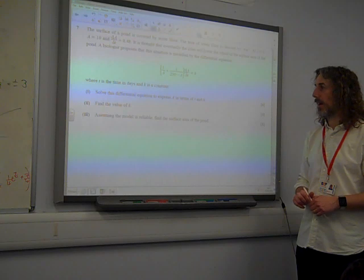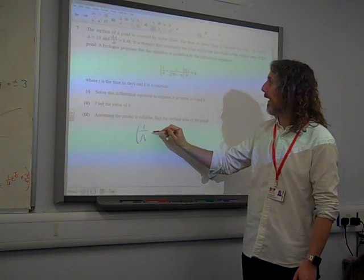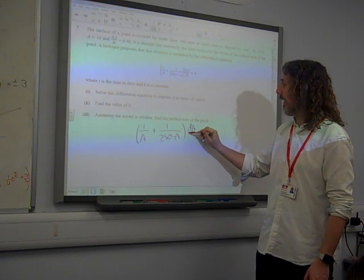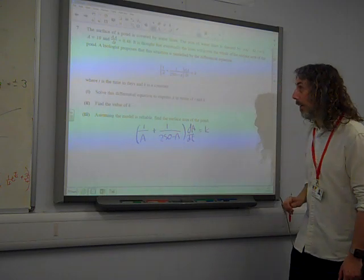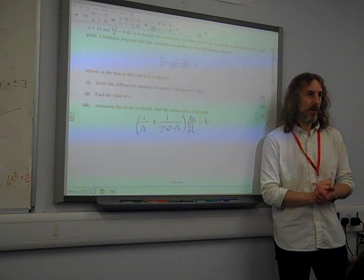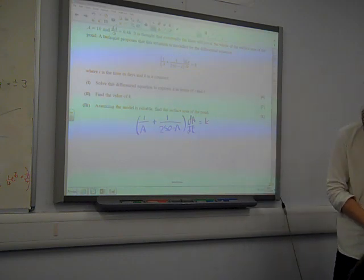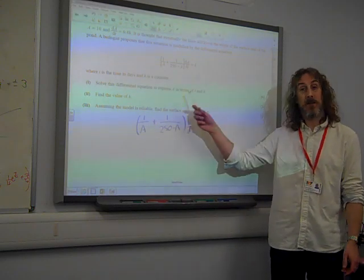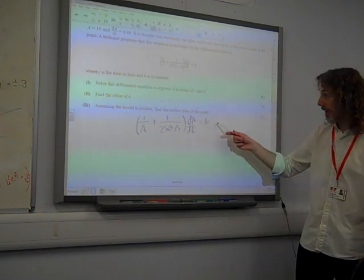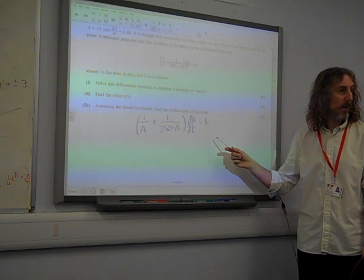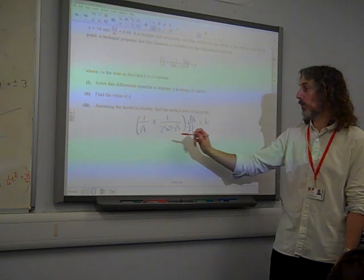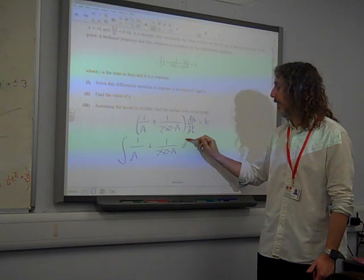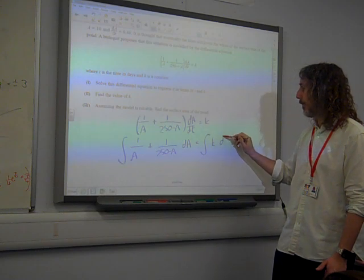Solve the equation to express a in terms of t and k. Here we go. We've got 1 over a plus 1 over 250 minus a, da/dt is equal to k. The kind of nice gentle start to the paper continues a little bit here, because they could have made this a lot worse. All of the a expressions are already on the left-hand side where a is on the top. That's where we want them. The right-hand side doesn't involve any a's, so it's all in the right place. If we separate the variables and integrate, that's already kind of been done. The integral of 1 over a plus 1 over 250 minus a da is the integral of k dt.